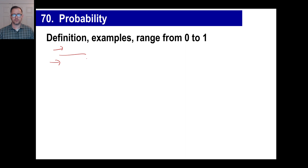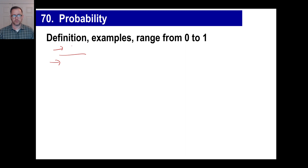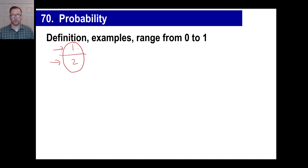For example, what are the odds that you will have a boy if your mom's expecting — will she have a boy or a girl? Well, the possibility of a boy would just be one, and the possibilities that are out there are either a boy or a girl, so it's two. The probability is one out of two.